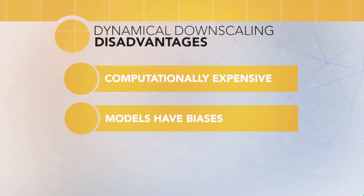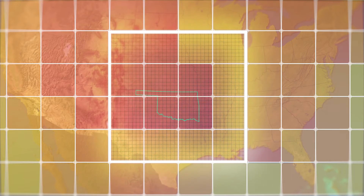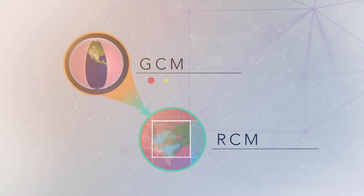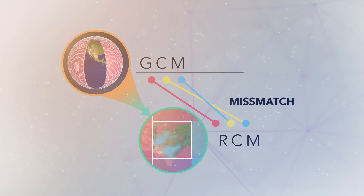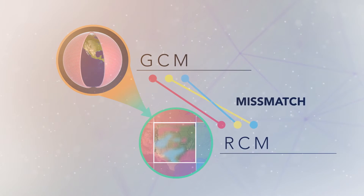Also, by using boundary conditions from the GCM, model biases from the GCM itself creep into the regional model simulations, further complicating the analysis. Finally, regional climate models and global climate models may suffer from what we call boundary issues — problems at the interface between the global climate model and the regional climate model. This issue arises because of the one-way interaction between the GCM and the RCM, leading to mismatches or unrealistic values of atmospheric variables like moisture or temperature at the RCM boundary.